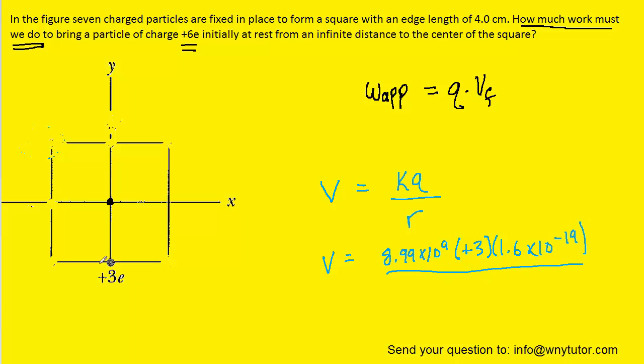And then we'll divide by the distance. And that would be the distance from this charge to the center. We were told that the entire length of one side of the square was 4 centimeters. So of course, this distance right here would be 2 centimeters. Let's also not forget to convert that into meters. So we would have 0.02 meters. So let's pick up our calculators and process this to see what the potential is at the center of the square.